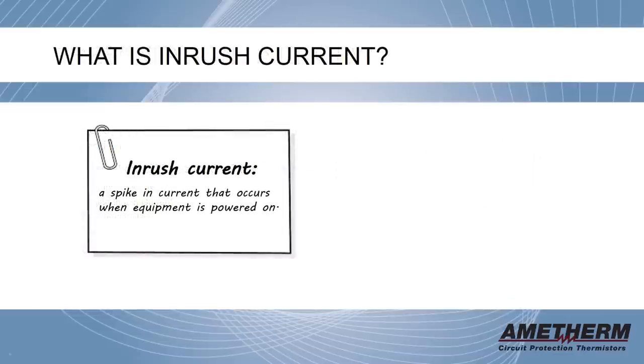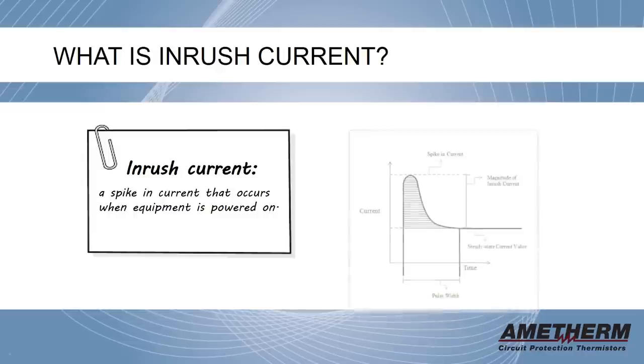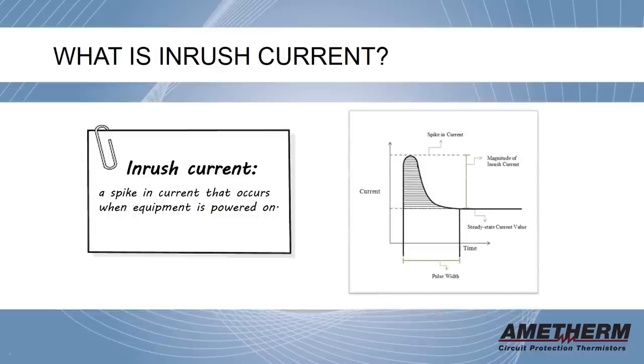Let's get started. First, let's define inrush current. As shown in the graph to the right, inrush current describes a spike in current that occurs when equipment is powered on.